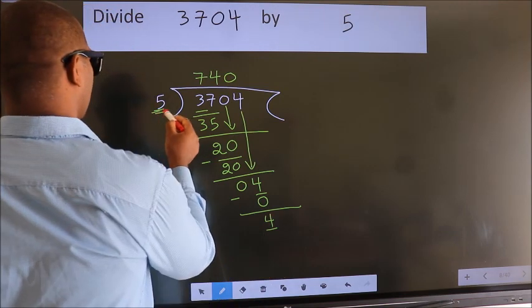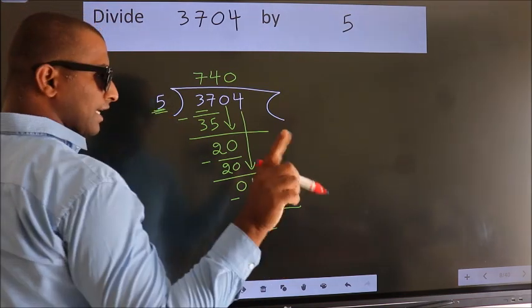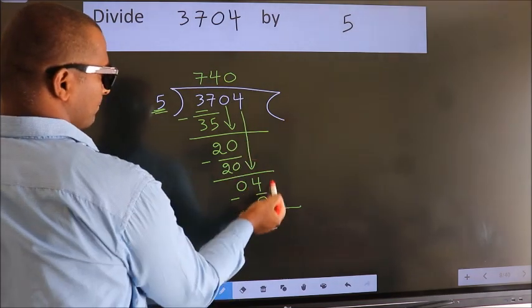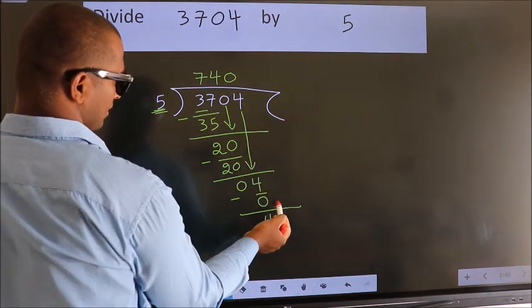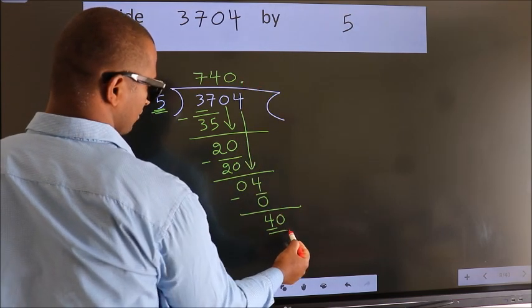Here we have 4. Here 5. 4 is smaller than 5. And we did not bring any number down. So now we can put dot and take 0. So 40.